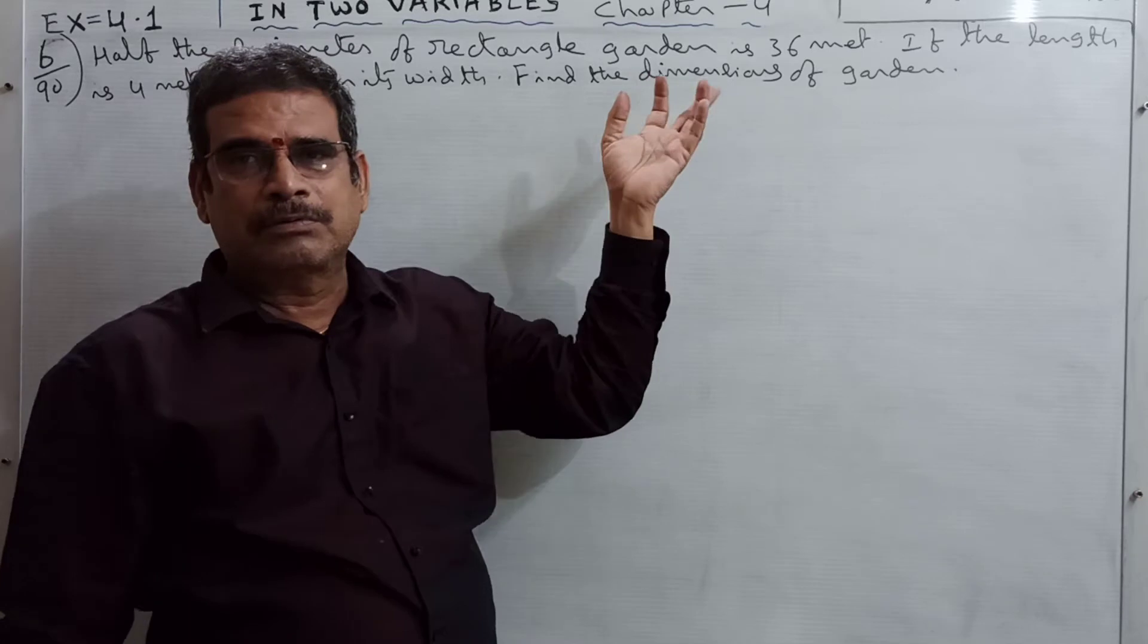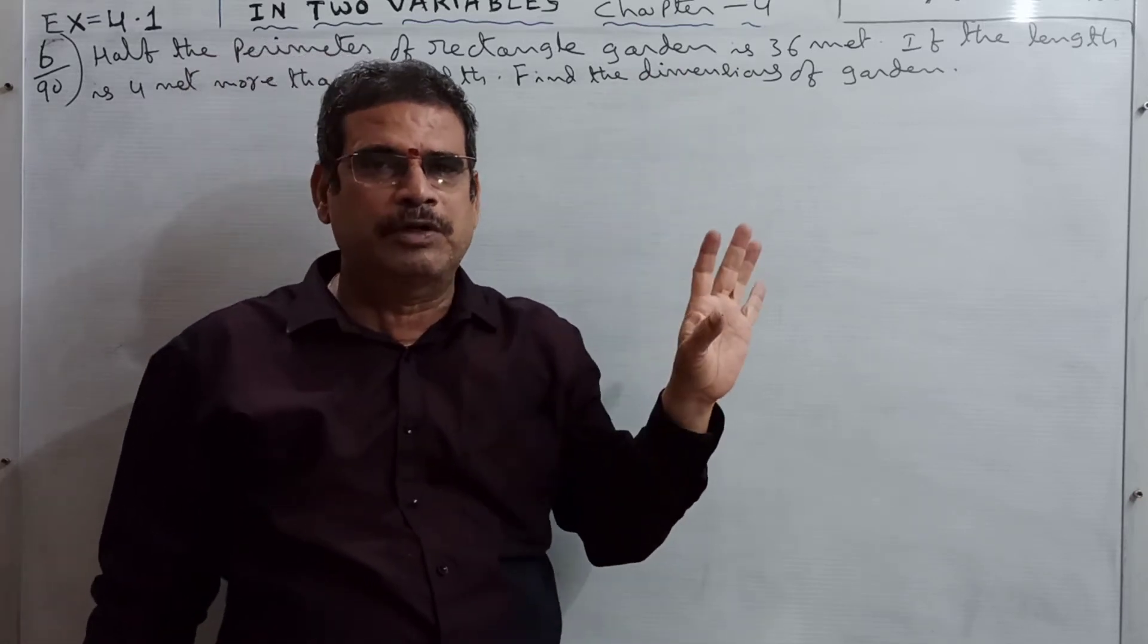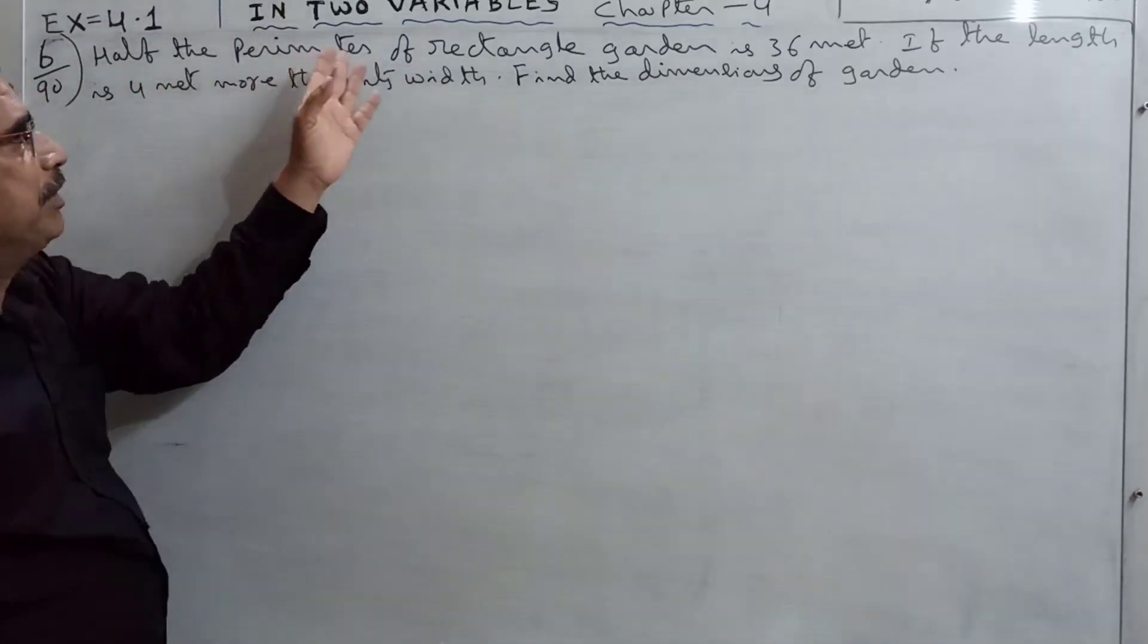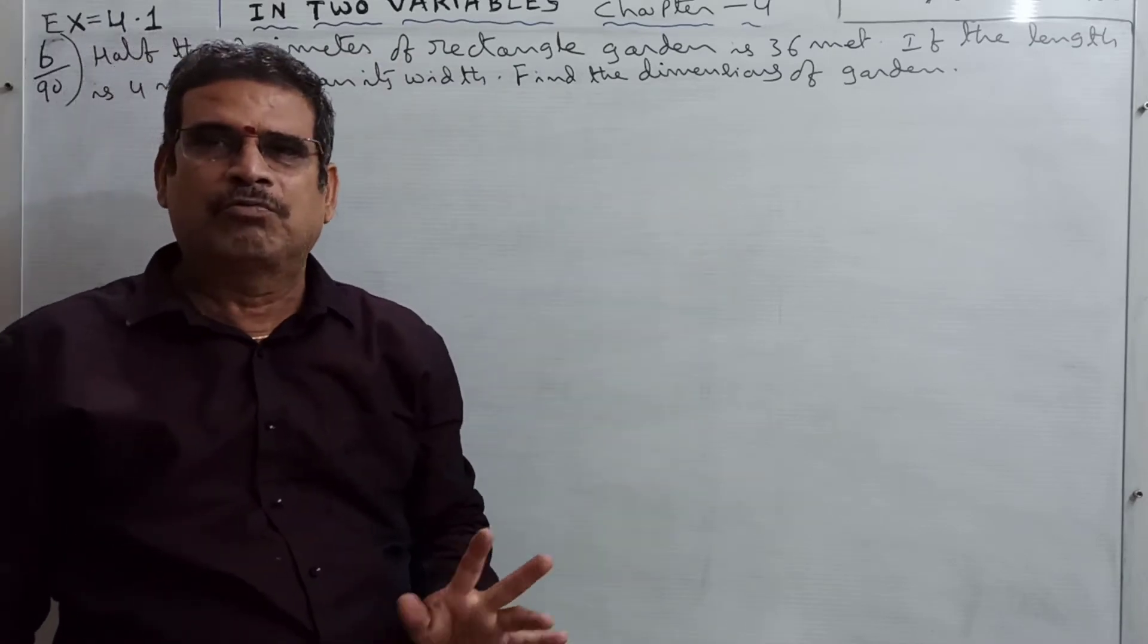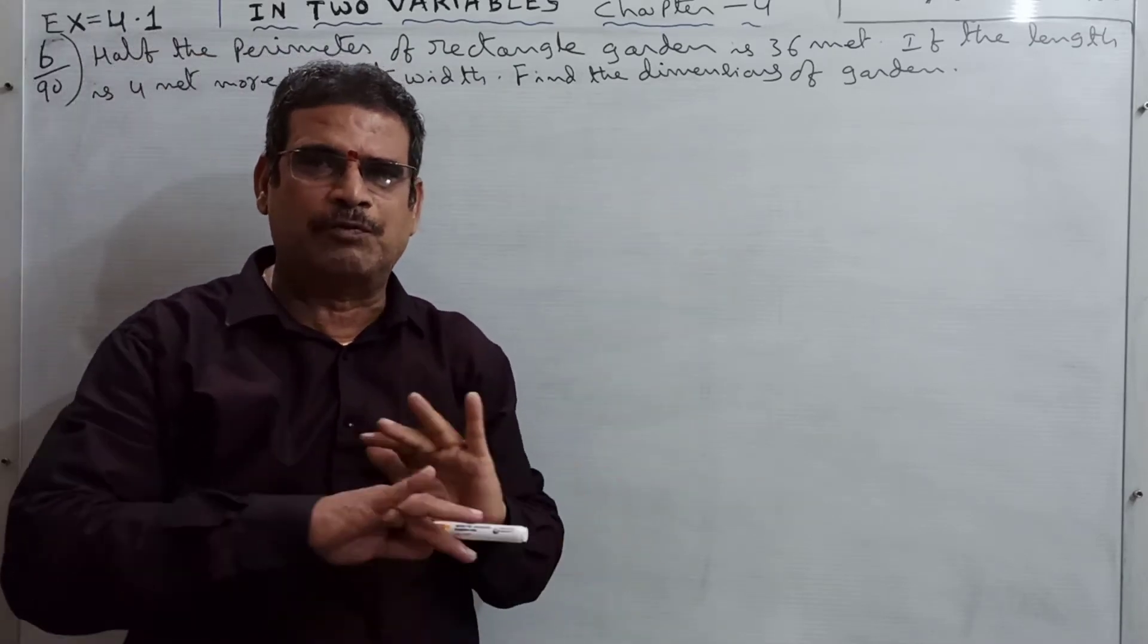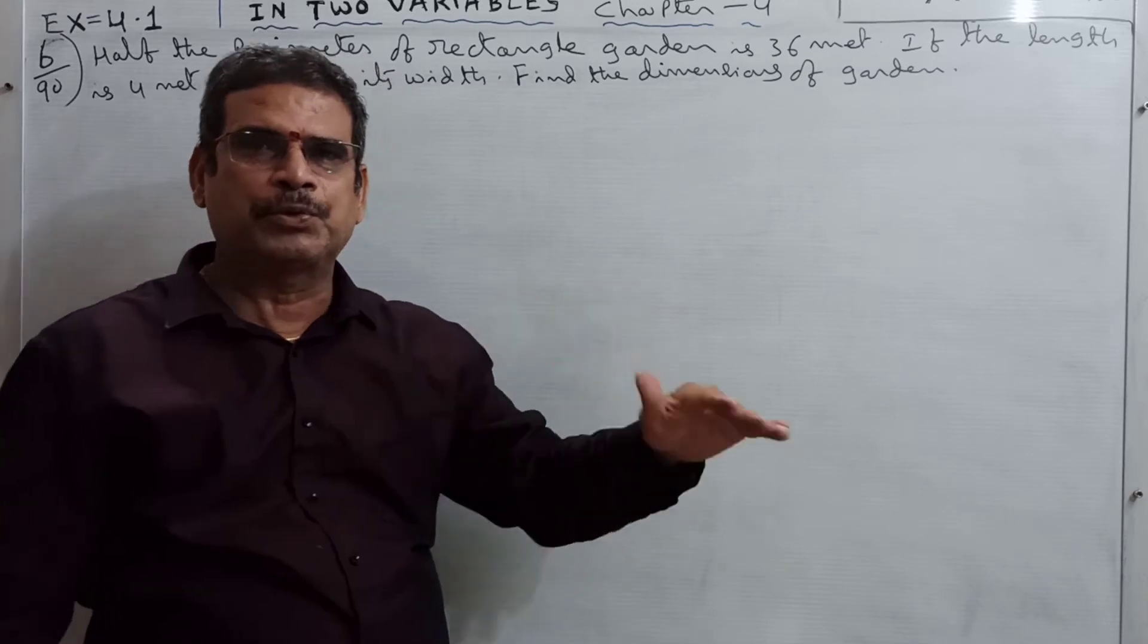So what is given, you have to observe carefully. Half the perimeter of the rectangular garden is given. What is the meaning of half? Half means 1 by 2.